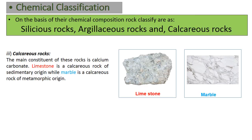Now let's discuss calcareous rocks, which is the chemical classification of rock. The main constituent of these rocks is calcium carbonate. Limestone is a calcareous rock of sedimentary origin, while marble is a calcareous rock of metamorphic origin. You can see the photographs of such rocks here.